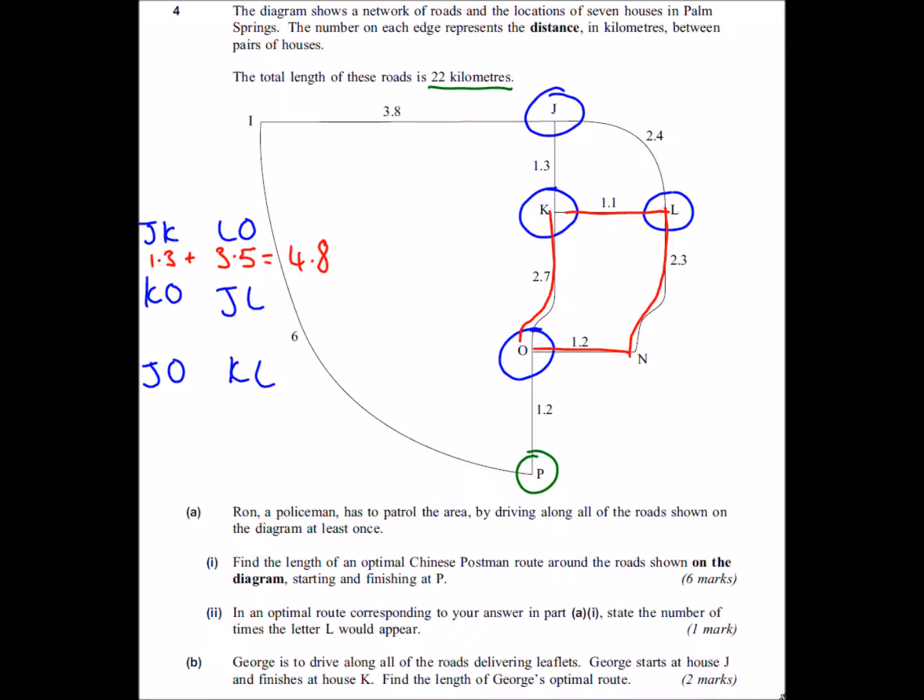So K to O, well clearly the shortest distance is 2.7 and J to L the distance is 2.4, so this gives us a total of 5.1. And if I connect up J to O, well that's going to be 4 and K to L is 1.1, so that's going to be 5.1.